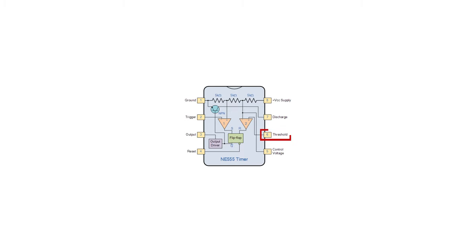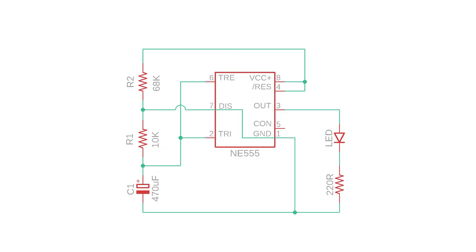And whenever the output is in off state, pin 7 will be internally connected to 0 volts. In this circuit, immediately after the power supply is turned on, the capacitor will be in discharged state and so the voltage at pin 2 will be 0 volts. Since this voltage is less than one third of the supply voltage, the output turns on.